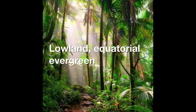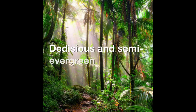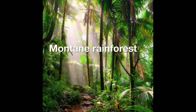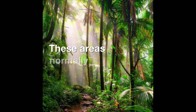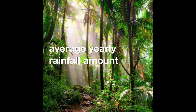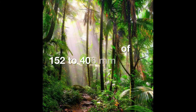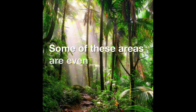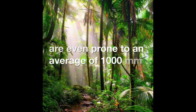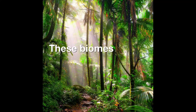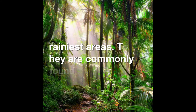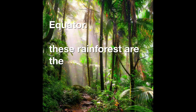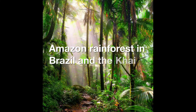The types include lowland equatorial evergreen rainforest, deciduous and semi-evergreen seasonal forests, montane rainforests and flooded forests. There are almost no seasonal changes in these forests. These areas normally receive an average yearly rainfall of 152 to 406 millimetres, and some areas are even prone to an average of 1,000 millimetres of rain per year. These biomes are found in the world's warmest, most humid and rainiest areas, commonly found near the equator. Examples include the Amazon Rainforest in Brazil and the Kaiyai National Park in Thailand.